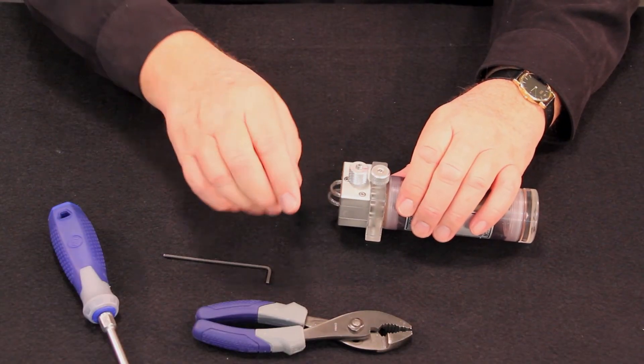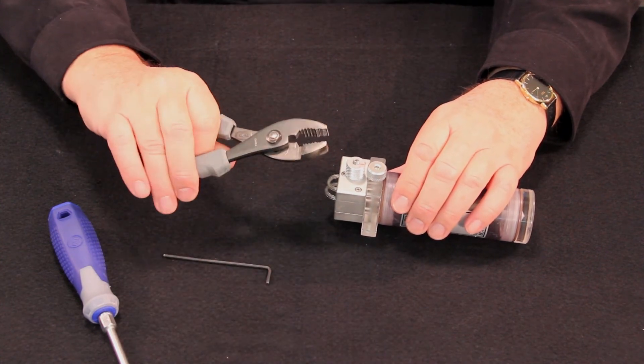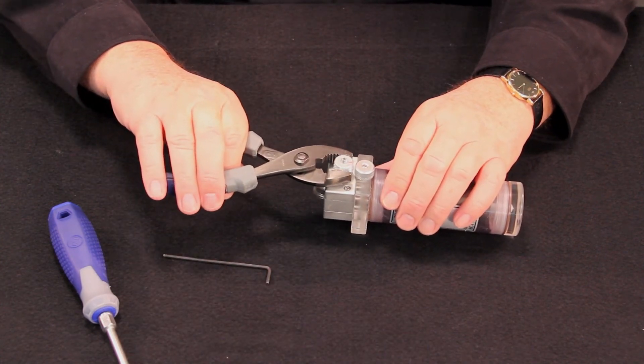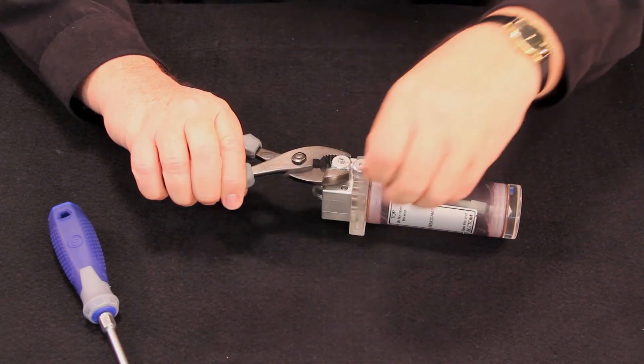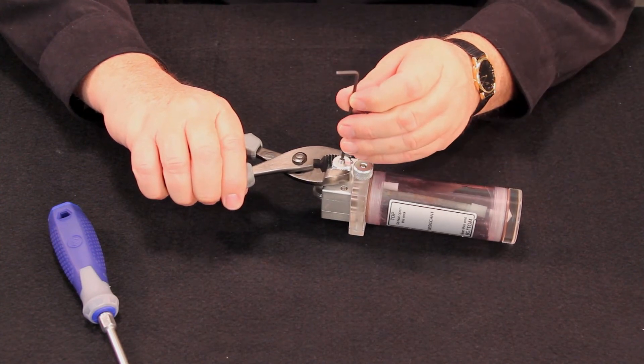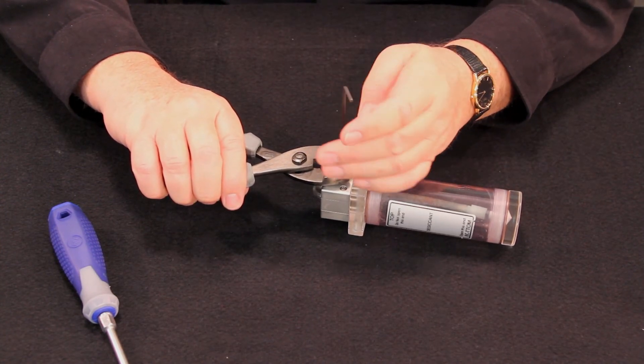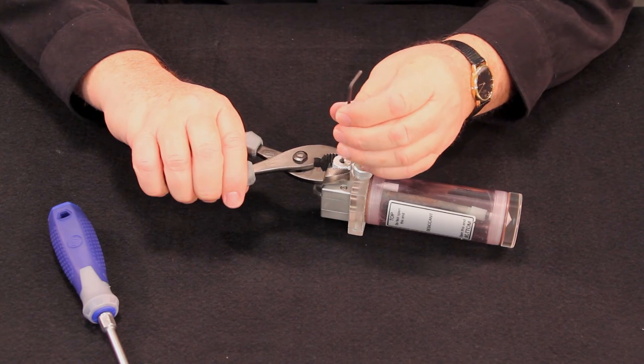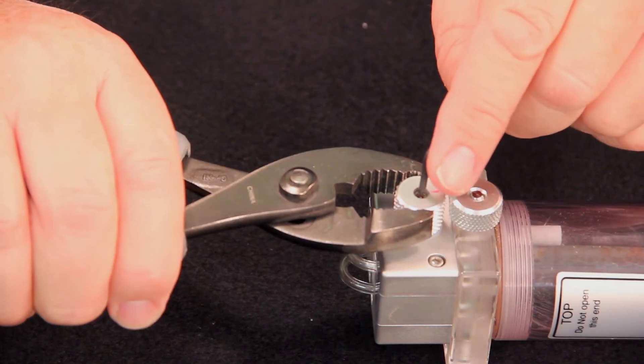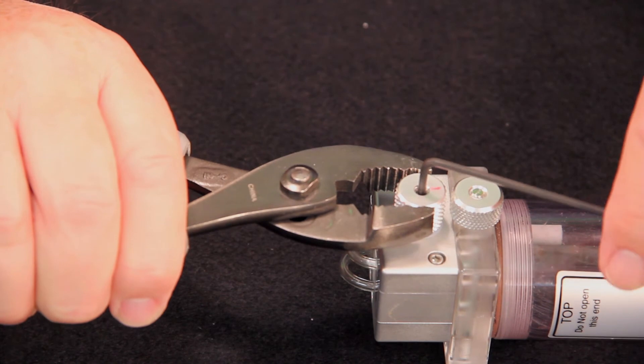Now, you can hold the knob in position with the pliers and tighten the set screw. The set screw needs to be firmly tightened.